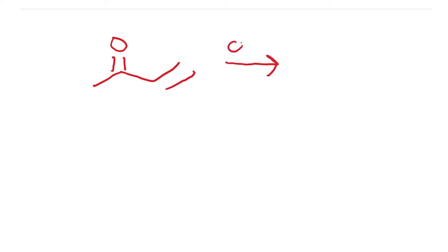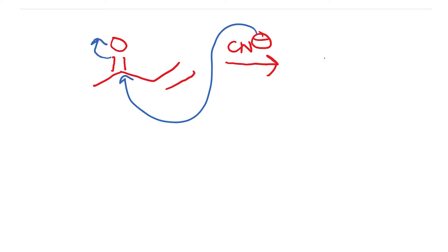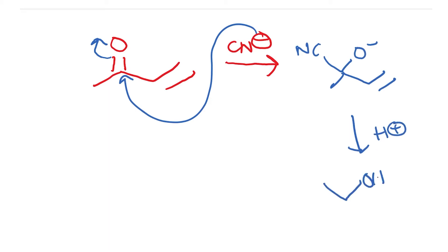What is proposed is that when you start with this type of a carbonyl compound and add CN minus, we have already looked at the formation of cyanohydrin. So you can produce this kind of intermediate which can then pick up a proton and give you the product. At 5 to 10 degrees centigrade, this is the dominant path — you don't see the other product being formed.